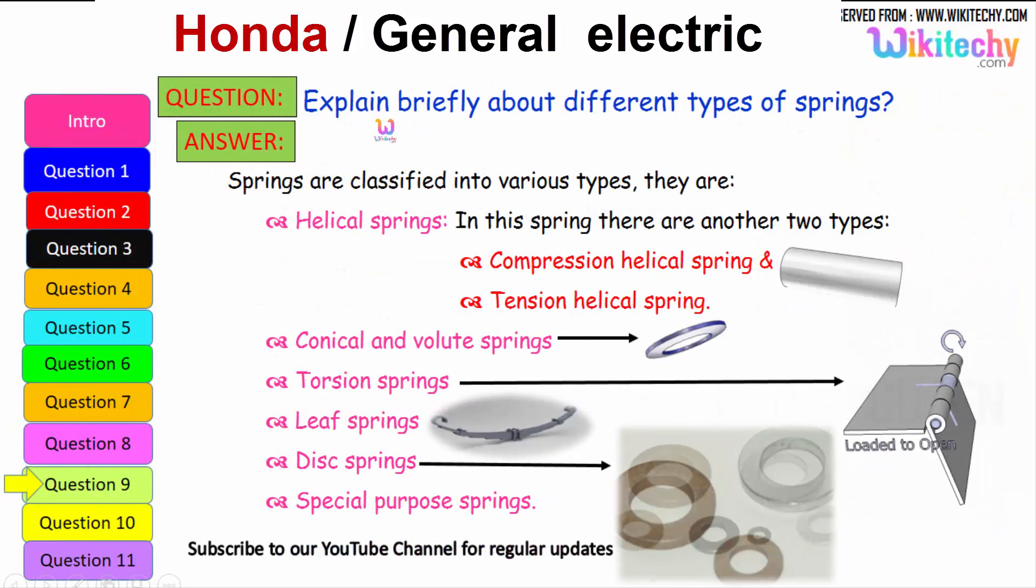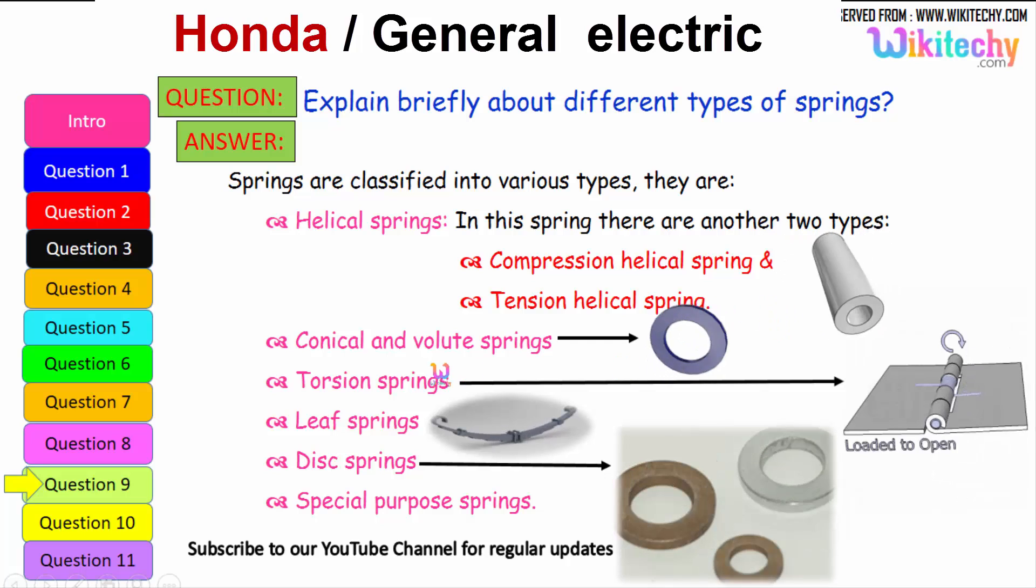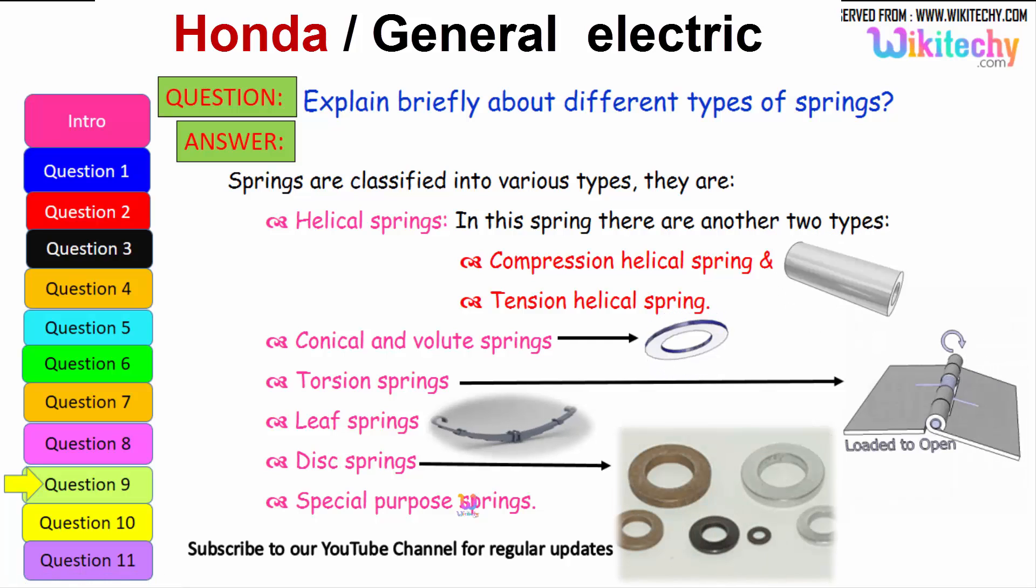Now let us see briefly about the different types of springs. Springs are classified into various types: first is helical springs. In the springs there are two types further - compression helical spring and tension helical spring. Next is conical volute springs. The other one is torsion springs. Here is leaf springs. Here is disk springs. And there are some additional springs which are called special purpose springs. These are the different types of springs available.